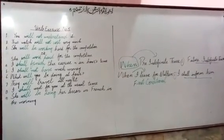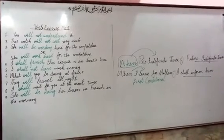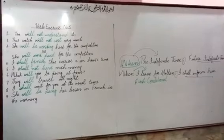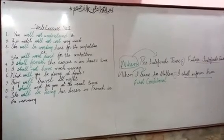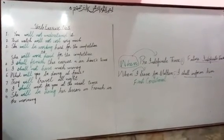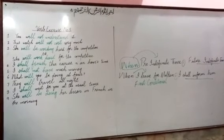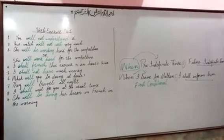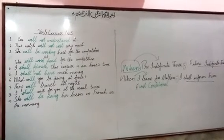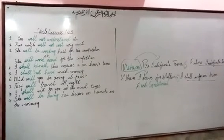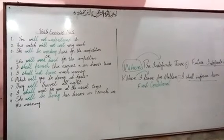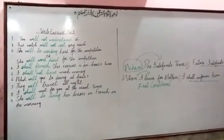Future continuous tense describes an action that is going on at some specific point in the future. This means it describes an ongoing action in the future. For example: 'I shall be reading the paper then.' The key point here is the word 'then.'